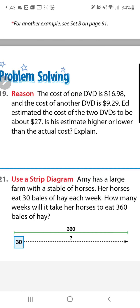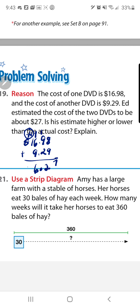Number 19: the cost of one DVD is sixteen dollars and ninety-eight cents, and another DVD is nine dollars and twenty-nine cents. The estimate for the two DVDs is about twenty-seven dollars — is this estimate higher or lower than the actual cost? First find the actual sum: sixteen ninety-eight plus nine twenty-nine equals twenty-six twenty-seven. Compare that to twenty-seven — the estimated sum is higher than the actual cost.